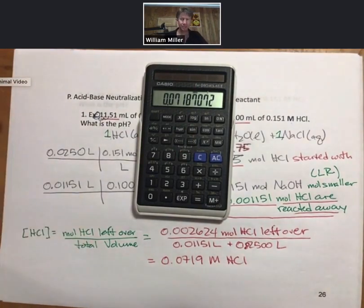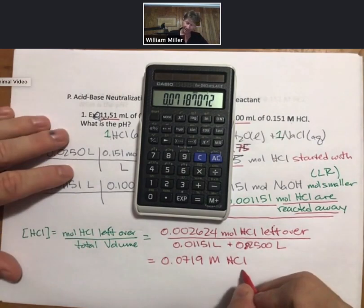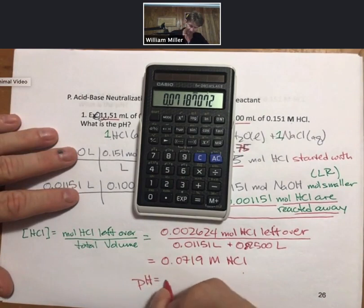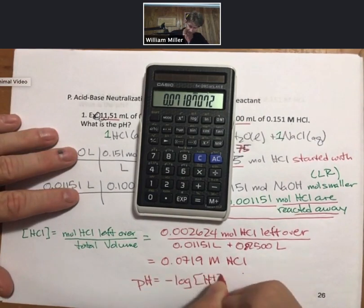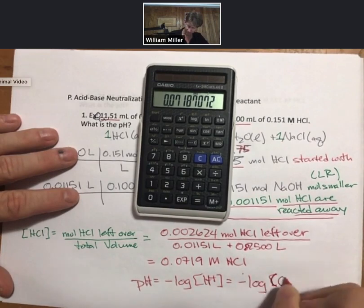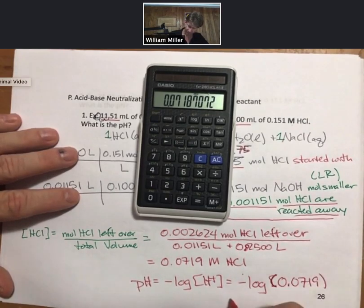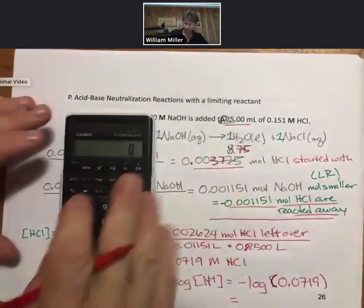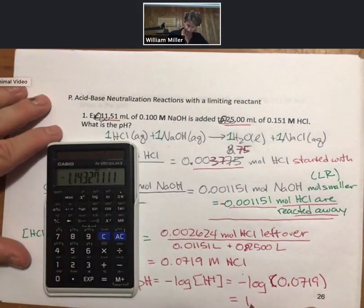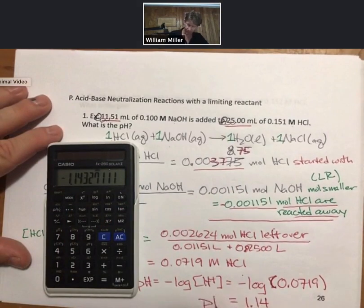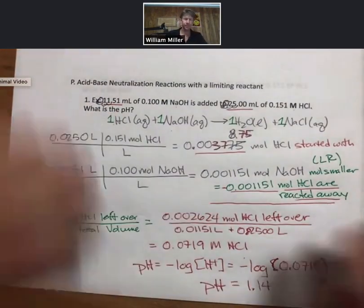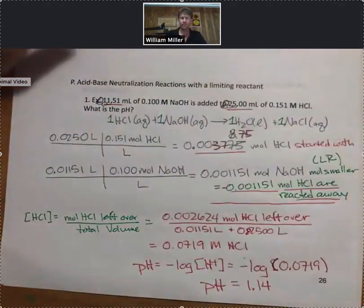No sodium hydroxide left over. And this is my concentration of hydrochloric acid, and I can plug that into the pH equation. And I always go back to the numbers that I've written down on the page, log it. pH equals 1.14.